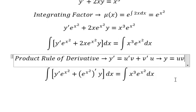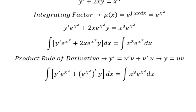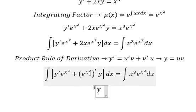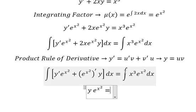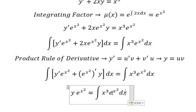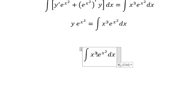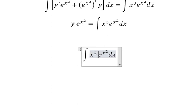So that means we will have y equals to e to the power of x squared. Now I will go to find this integration. We have x to the power of 3, and we can write that as x squared multiplied by x.